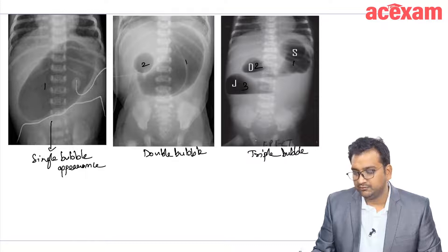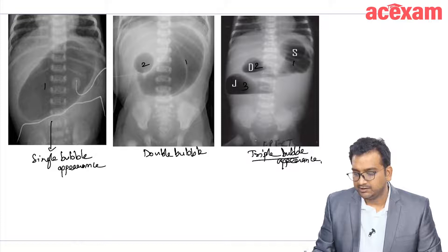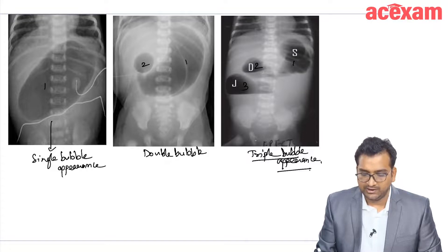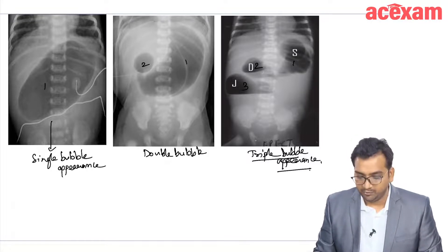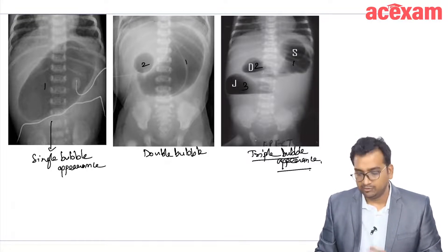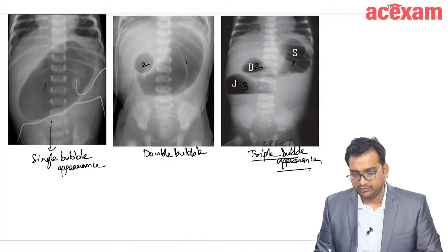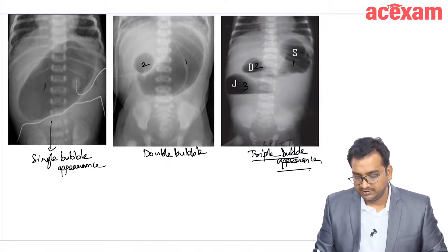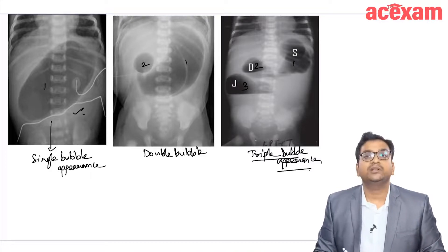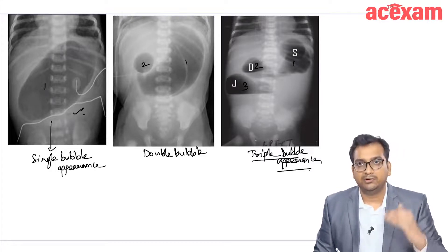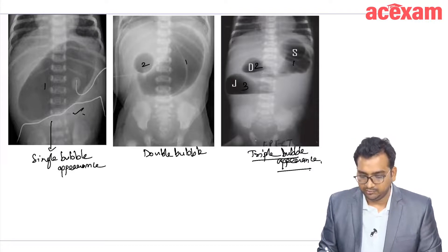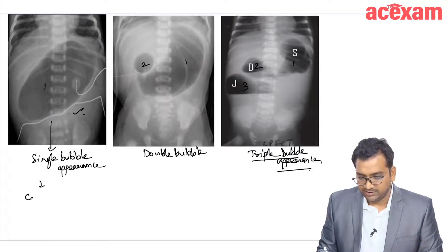This is very important from an MCQ point of view. There is a child who is having multiple vomiting that is non-bilious, and an x-ray was done. The image is this. What is the diagnosis? The most likely diagnosis is congenital hypertrophic pyloric stenosis.